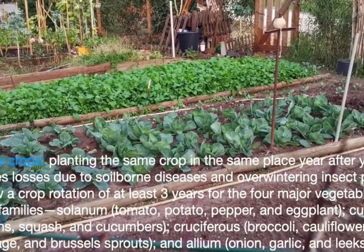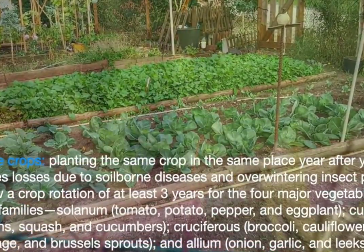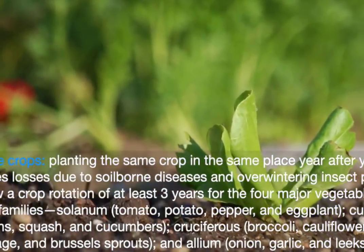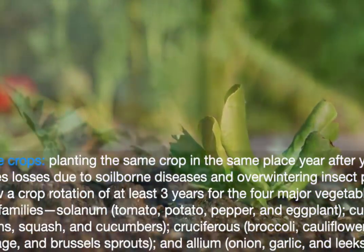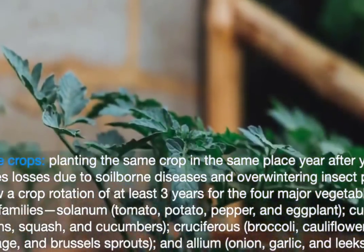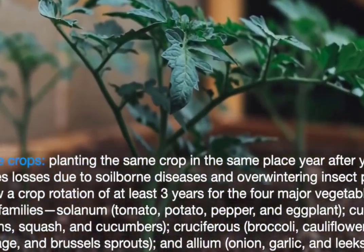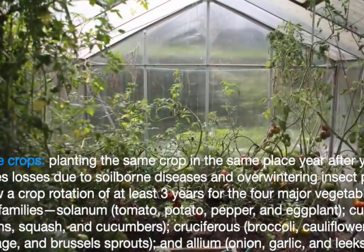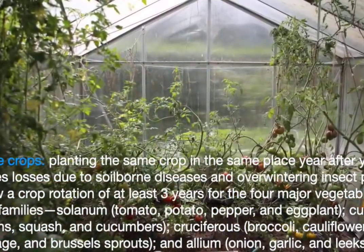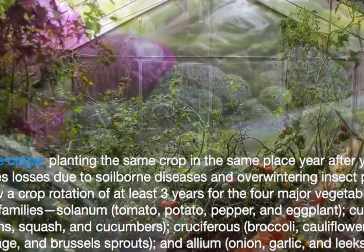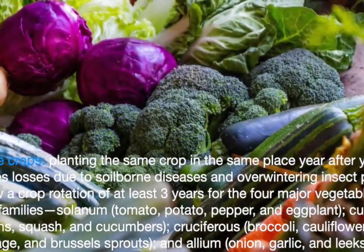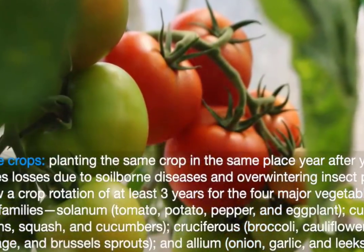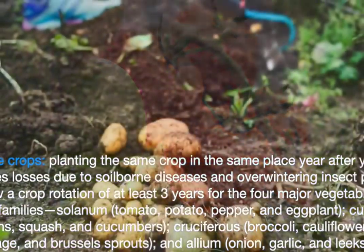Planting the same crop in the same place year after year creates losses due to soil-borne diseases and overwintering insect pests. Follow a crop rotation of at least three years for the four major vegetable plant families: Solanaceae — tomato, potato, pepper and eggplant.